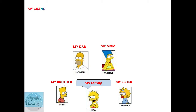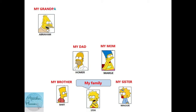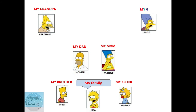Now we have to talk about the grandfather — el abuelo. He is Abraham Simpson. Another way to say 'grandfather' is 'grandpa.' Otra forma de decir 'abuelo' es 'grandpa.' And the grandmother — la abuela — Jackie. Another way to say 'grandmother' is 'grandma.' These are the more commonly used forms.